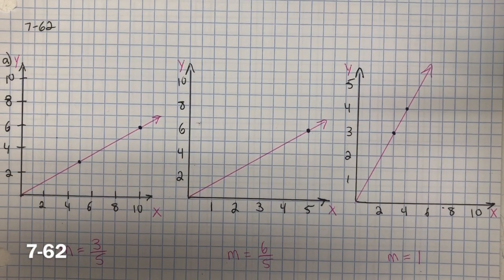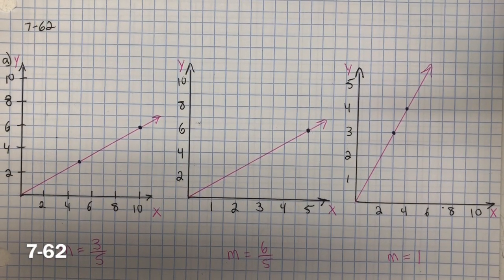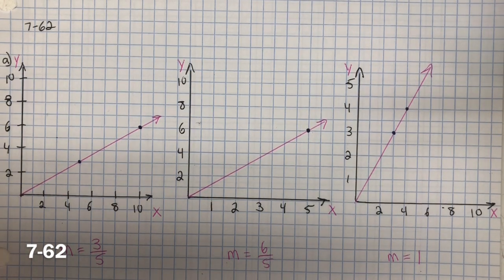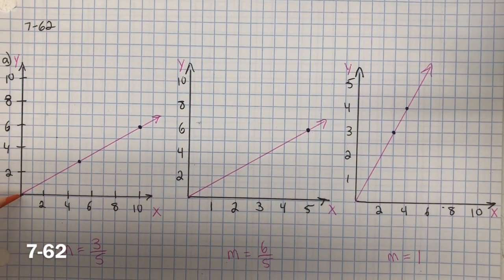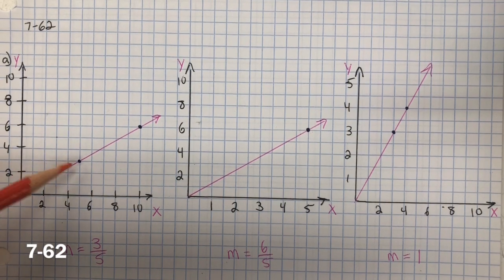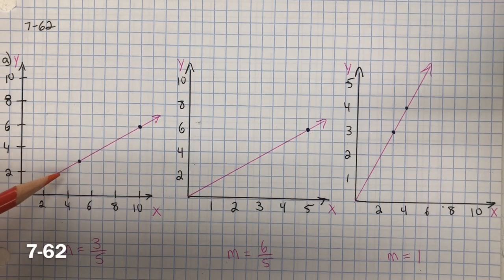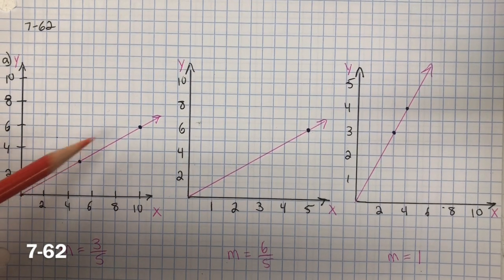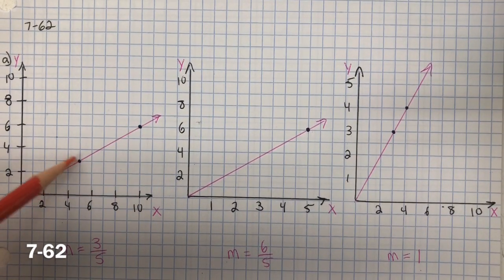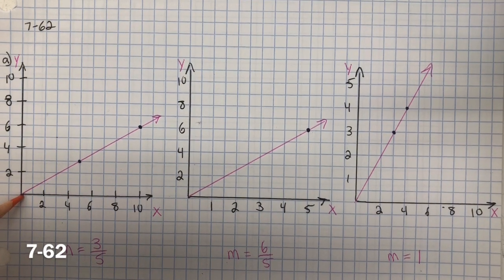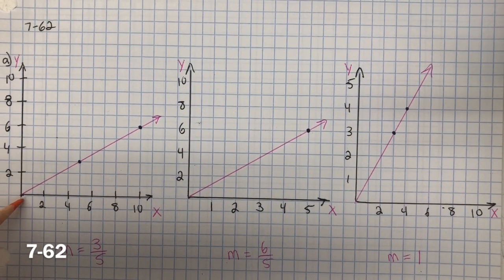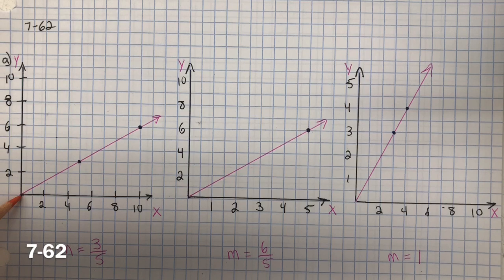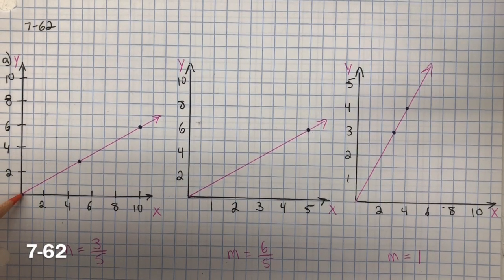In problem 7-62, you need to find the slope of each line. So in order to find the slope, I need to look at the grid lines and find where the line intersects those grid lines. These are called lattice points. So when I find the slope, the rise over run, I'm going to start at this lattice point.